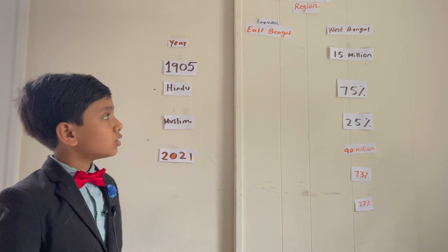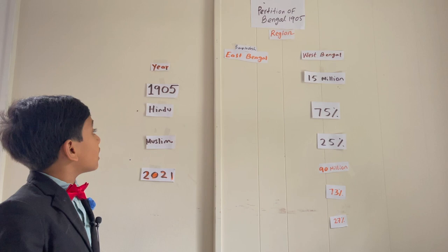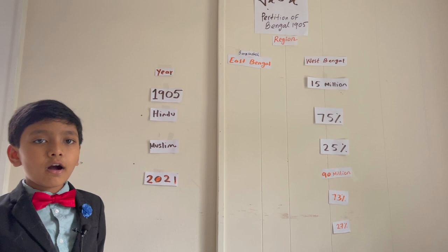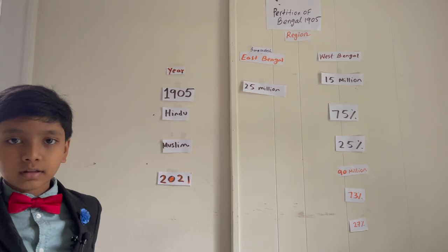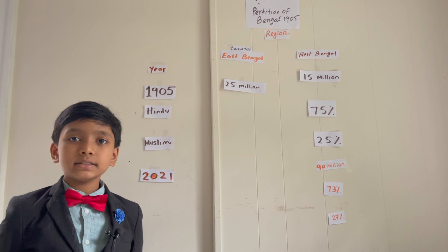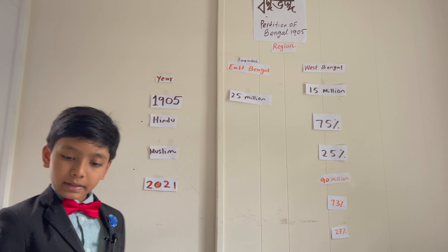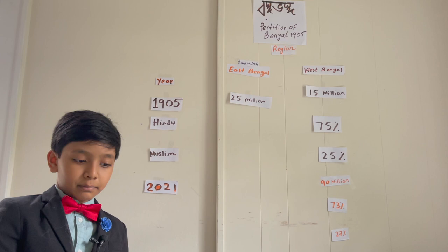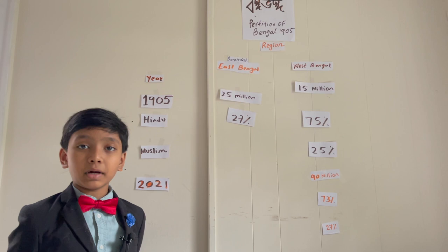Now let's look at East Bengal statistics. What was the population of East Bengal, or Bangladesh, in 1905? That would be 25 million. What percentage of East Bengalis were Hindu in 1905? That would be 27 percent, because Hindus were a minority in East Bengal. So 73 percent of East Bengalis were Muslim.